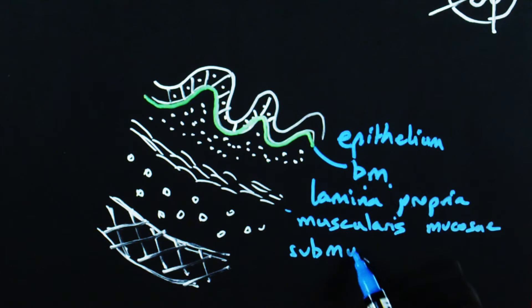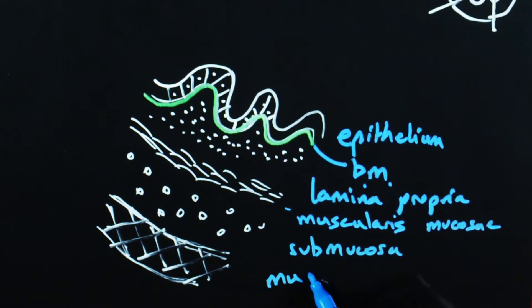Then the submucosa. And finally, the proper muscle layer, or muscularis propria.